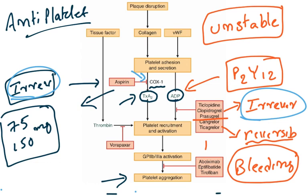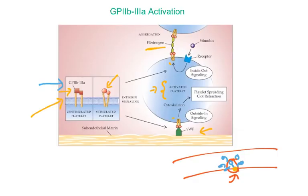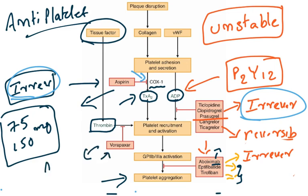The next class targets GP2B3A receptor activation, inhibited by abciximab, eptifibatide, and tirofiban. When these drugs are used, the receptors are completely blocked, so platelets cannot bind with von Willebrand factor or other platelets, blocking platelet aggregation. Abciximab is a monoclonal antibody and irreversible inhibitor; the remaining two are reversible inhibitors. Additionally, tissue factor activation leads to thrombin formation, and these thrombin receptors are blocked by vorapaxar — a kind of anti-coagulant drug.